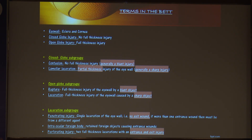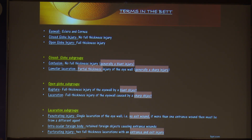In the open globe varieties, which involve full thickness injury, rupture occurs with a blunt object and lacerations with a sharp object. The three sub-classifications of lacerations are: penetrating injury, where there is only an entry wound and no exit wound; perforating injury, where there are both entrance and exit wounds; and intraocular foreign body, a retained foreign body causing entrance wounds.